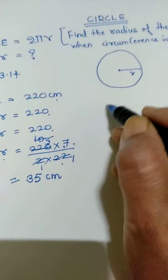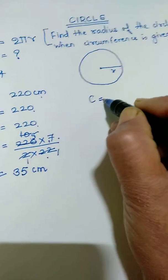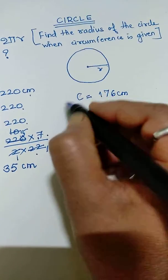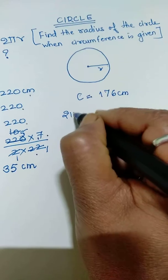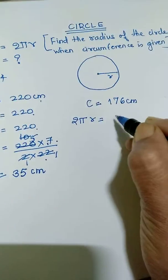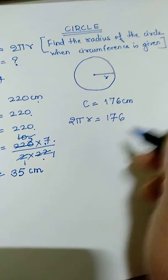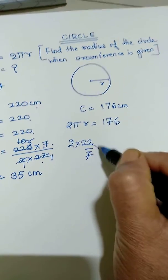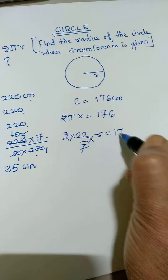Let us take another example. Suppose you have given C, that is circumference, equal to 176 centimeter. So we have to just write the formula 2πr is equal to 176. So 2 into 22/7 into r equal to 176.